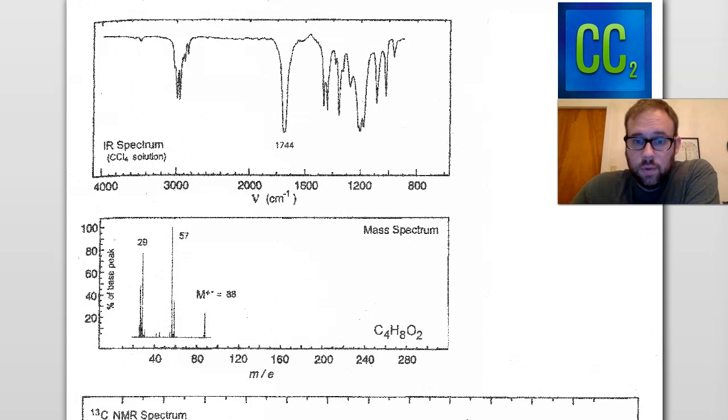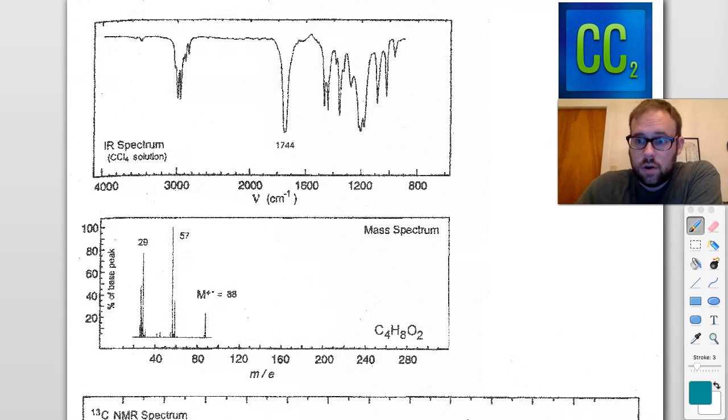The first thing we want to do is solve for our degrees of unsaturation. So for degrees of unsaturation, it's two times the number of carbons, which is four, plus two. And then oxygens are ignored, so we will subtract the number of hydrogens, eight, divide by two.